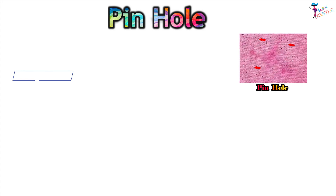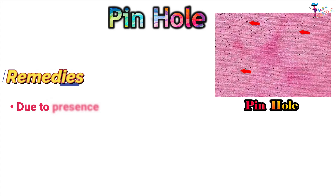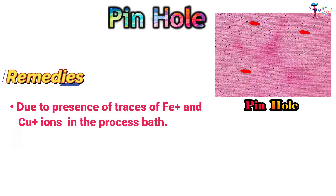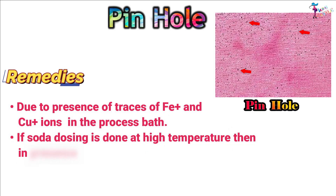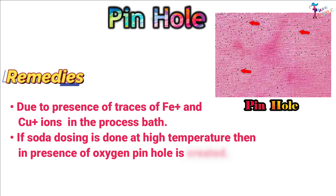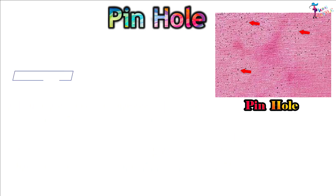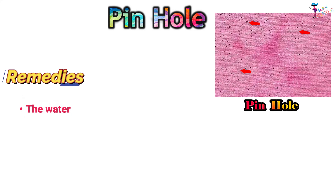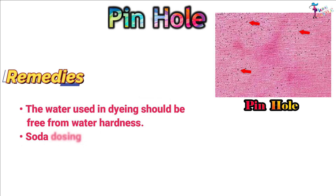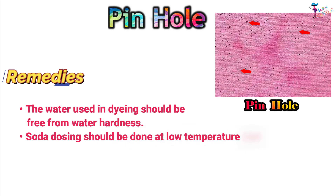Pinhole. Causes: Due to presence of ferrous and copper ions in the process bath; if soda dosing is done at high temperature, then in presence of oxygen a pinhole is created; and inadequate amount of stabilizer in hydrogen peroxide bleaching. Remedies: The water used in dyeing should be free from water hardness, and soda dosing should be done at low temperature.